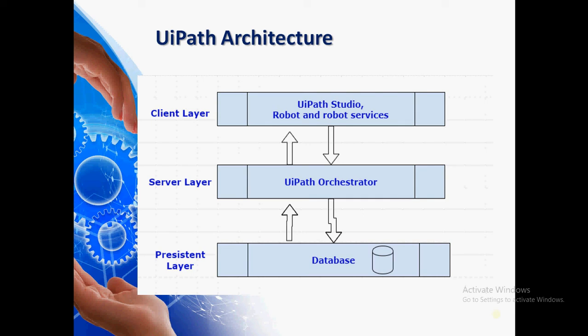Next, we have the robot and the robot services. When you install UiPath completely — I am referring to the community version — along with UiPath Studio you will also get a UiPath robot. So that comes under the client layer as well. We will see how to deploy the robot and run it from the robot tray. The client layer basically includes UiPath Studio, UiPath robot, and robot services.